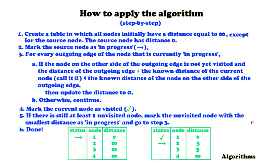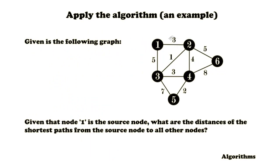That's it for the step-by-step guide. Now let's directly apply the algorithm to an example — we will master using the step-by-step guide and I'll refer back to it as we go through the answer. The question is: given that node 1 is the source node of this graph, what are the distances of the shortest paths from the source node to all other nodes? Apply the algorithm using the steps I just gave. You're free to solve the exercise on your own first — if you want to do that, please pause the video and come back. When you're done, just press play and I'll explain the answer.